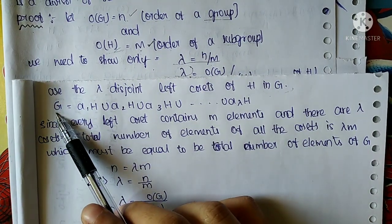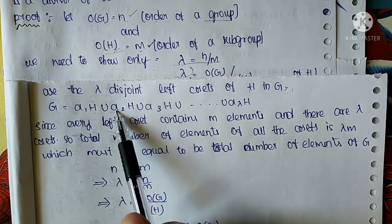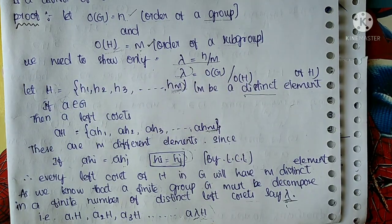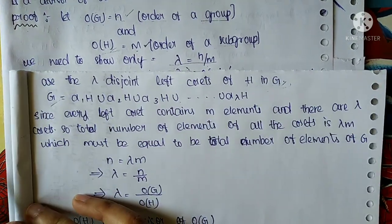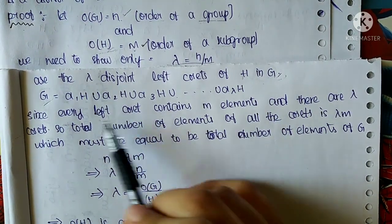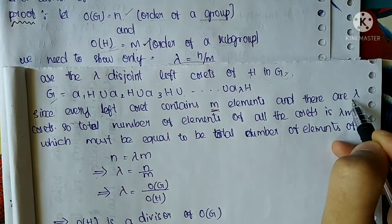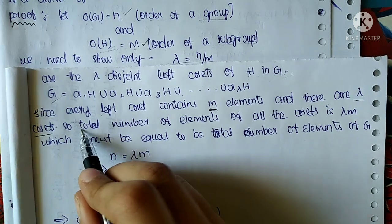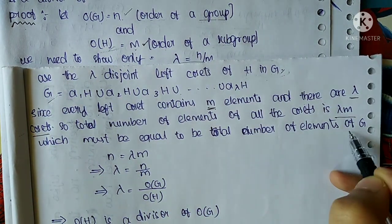Here we can see G equals the union of all the left cosets. Since H is the subgroup of G, we have written G as A1H union A2H union ... union A-lambda-H. Since every left coset contains m elements and there are lambda cosets, the total number of elements of all the cosets is lambda times m.